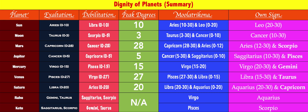Venus, the planet of love, gets exalted in Revati nakshatra fourth pada — the last star of the zodiac — in the last zodiac sign of Pisces, with peak exaltation at 27 degrees. It reaches peak debilitation at 27 degrees of Virgo. Its moolatrikona spans Pisces 27–30 and Libra 0–15. Venus is extremely powerful in those degrees. Libra 15–30 and the entire sign of Taurus are considered its own sign.